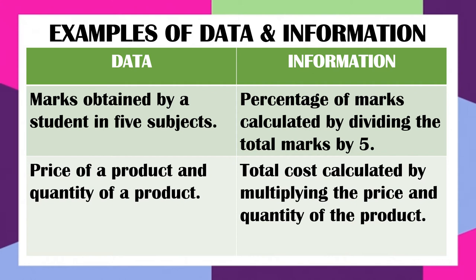The second example uses price of a product and quantity of a product. Suppose a vendor is selling lace and it has been out of stock, so he has ordered more. In one box of lace, 30 packets come and each packet's price is 10 rupees. So the price of the product is 10 and the quantity is 30 — this is my data. When I calculate it: price into quantity, which is 10 into 30, the answer is 300. So 300 is my information. Simple data, when it is processed and converted, we call it information.